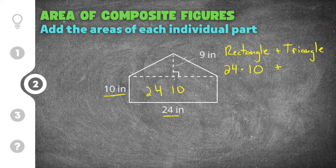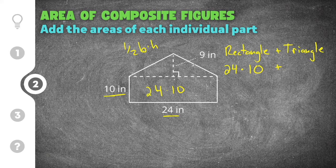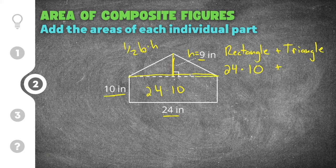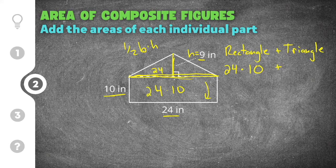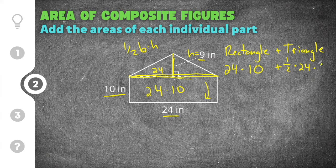The area of the triangle is one-half base times height. Looking at our triangle, the height is nine. The base runs the whole length of the triangle, which is the same as the base of the rectangle — also twenty-four. So the area of the triangle is one-half times twenty-four times nine.